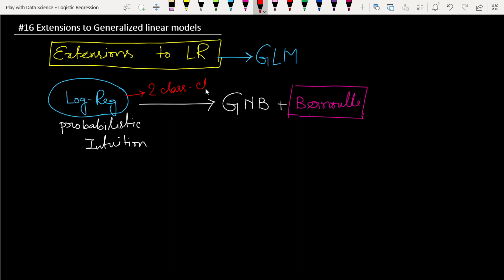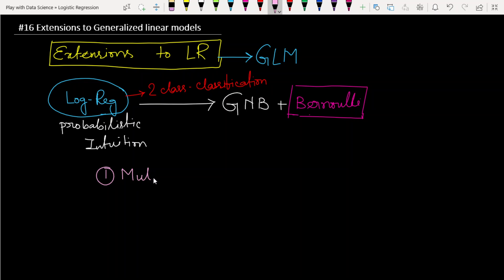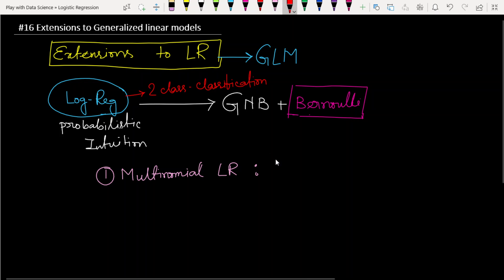Logistic regression is a two-class classification model. Now if we want to build a multinomial logistic regression, we want to build a multi-class classification. Here we are using multinomial logistic regression, and in place of Bernoulli we use multinomial distribution.